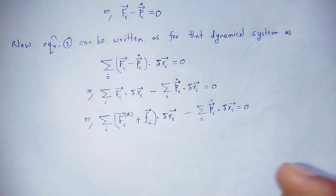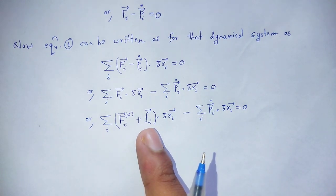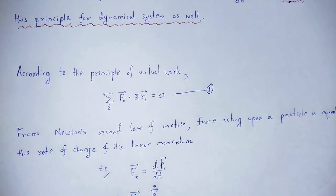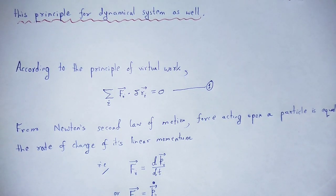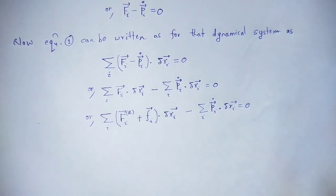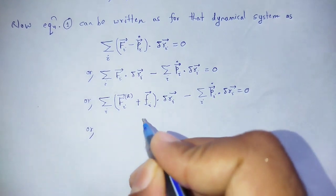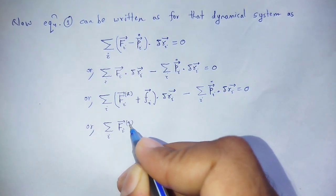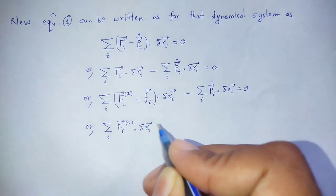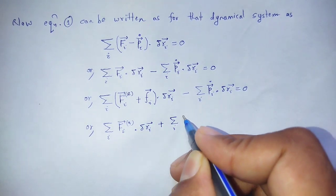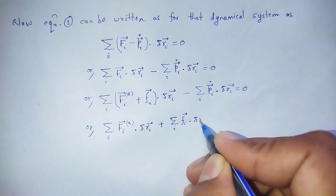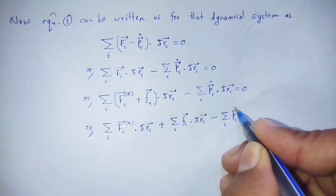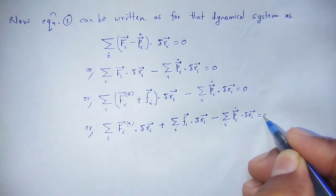Here we neglect the constraint force. In the principle of virtual work, we also neglect the constraint force — meaning we restrict the system so it has no constraint force. Expanding the terms, summation over i of fᵢ dot δrᵢ minus summation over i of ṗᵢ dot δrᵢ is equal to zero.